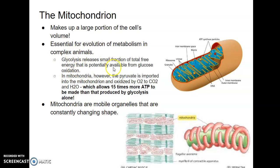Glycolysis releases a very small amount of the total free energy that is potentially available. Whereas when those two pyruvate molecules enter the mitochondria and are oxidized into CO2 and water, that whole process allows for about 15 times more ATP to be made than what would be made with anaerobic glycolysis alone. So the fact that we have the mitochondria is a really amazing evolutionary advantage in terms of producing energy.